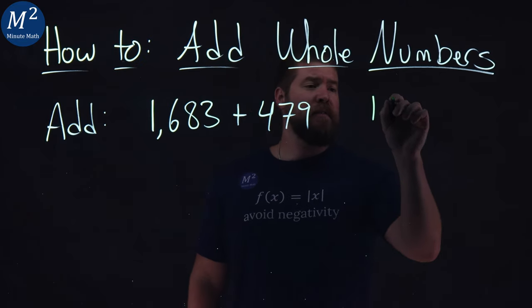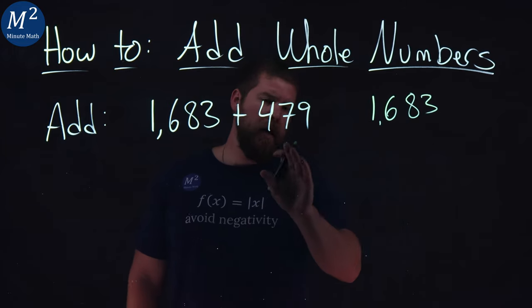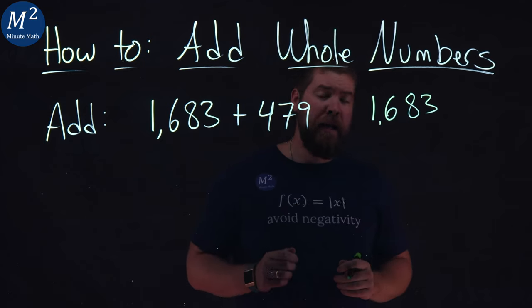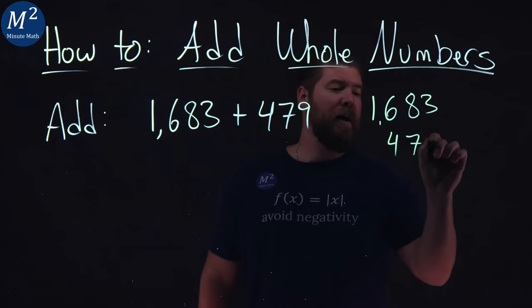I'm first going to write our first number, 1683. I'm going to put a comma if you want right there. Underneath it, I'm going to write my 479, but I'm going to line up each place value. We have 479 here.